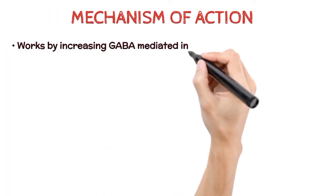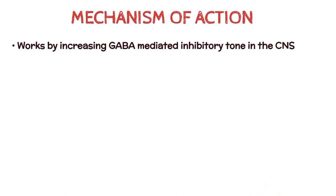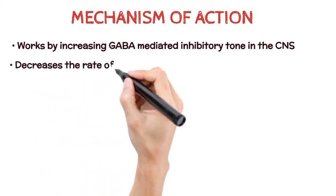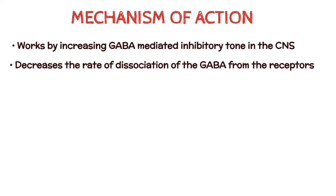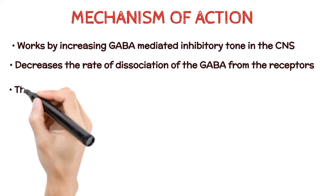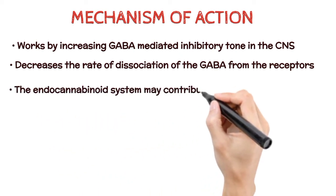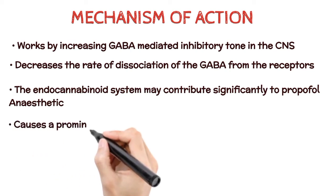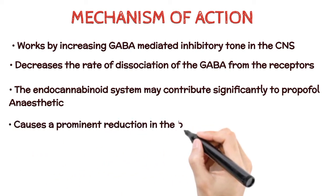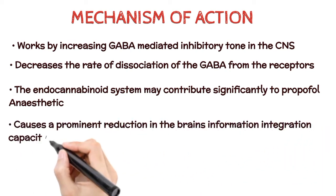Mechanism of action. Works by increasing GABA-mediated inhibitory tone in the CNS. Decreases the rate of dissociation of GABA from the receptor, thereby increasing the duration of the GABA-activated opening of the chloride channel, resulting in hyperpolarization of the cell membrane. The endocannabinoid system may also contribute significantly to propofol's anesthetic action and its unique properties. Causes a prominent reduction in the brain's information integration capacity.